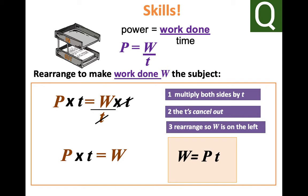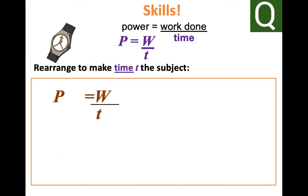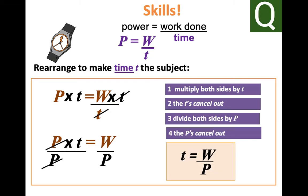In order to make time the subject of the equation, we have time equals work done divided by power. Remember, time in this case is measured in seconds, work done is measured in joules, and power is measured in watts.